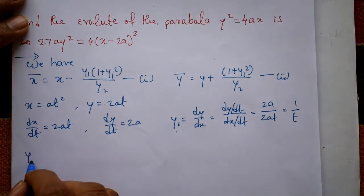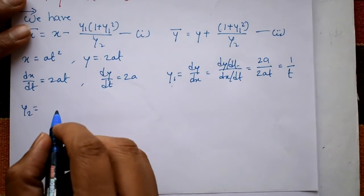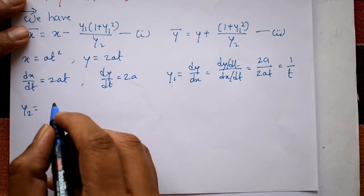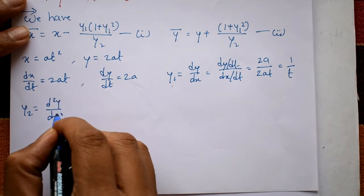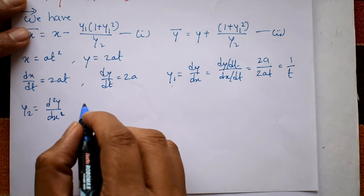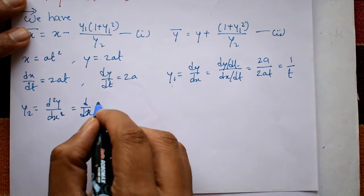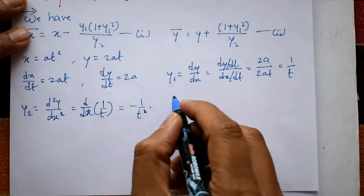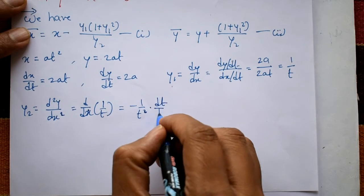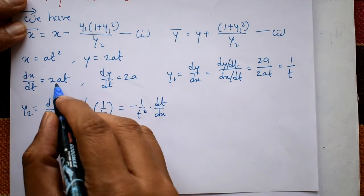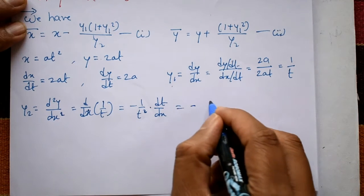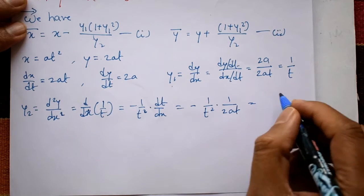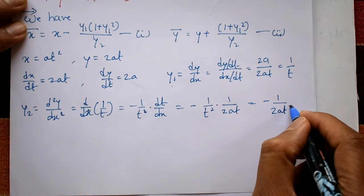Next we need y2 = d²y/dx². Differentiating y1 = 1/t with respect to x: y2 = d/dx(1/t) = (-1/t²) · (dt/dx). Since dx/dt = 2at, we have dt/dx = 1/(2at). Therefore y2 = (-1/t²) · (1/2at) = -1/(2at³).